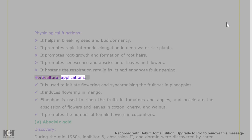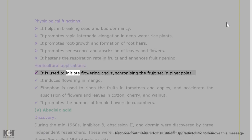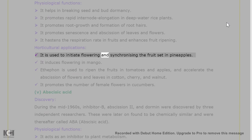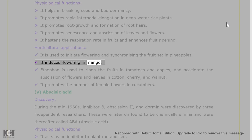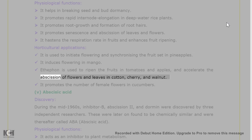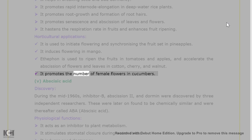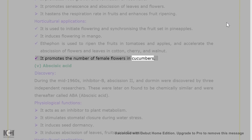Horticultural applications of ethylene: it is used to initiate flowering and synchronize the fruit set in pineapples. It induces flowering in mango. Ethephon is used to ripen the fruits in tomatoes and apples, and accelerate the abscission of flowers and leaves in cotton, cherry, and walnut. It promotes the number of female flowers in cucumbers.